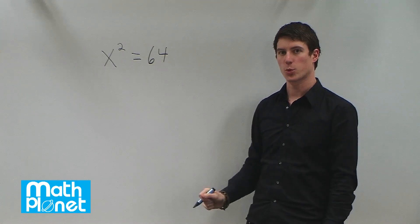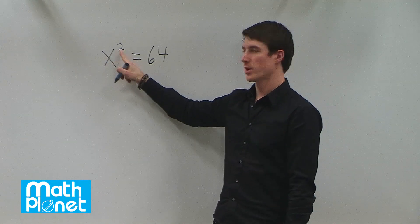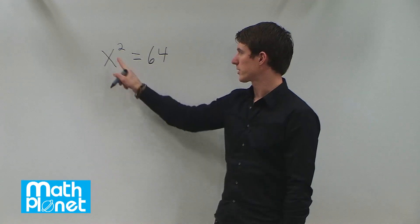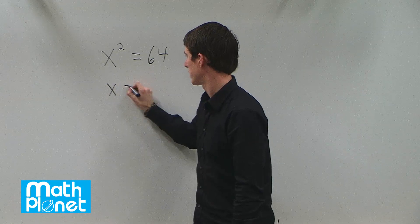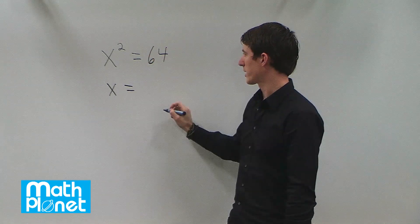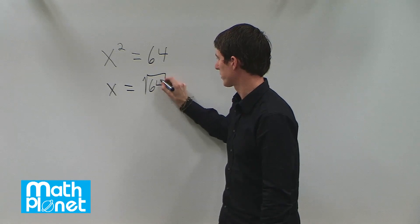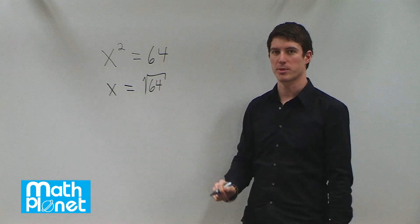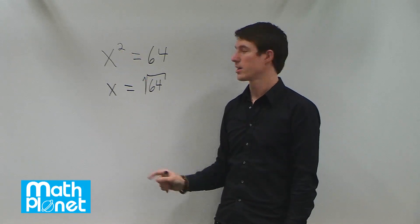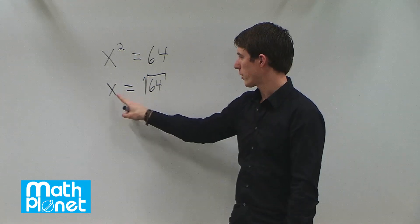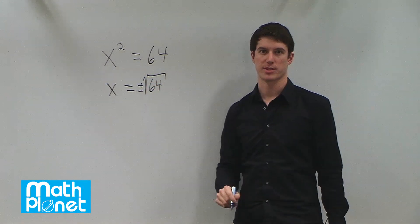To solve for this, we need to take the square root of both sides. The square root is the inverse operation of a square. If we take the square root of x squared, then we're left with just x. We can rewrite it as the square root of 64. But we need to remember something very important: since this is a quadratic, we're going to have two answers. So x is actually plus or minus the square root of 64.